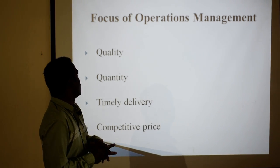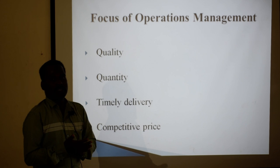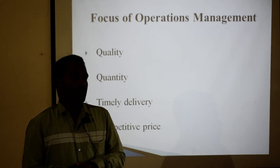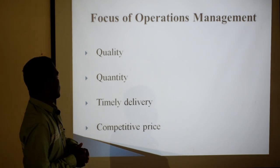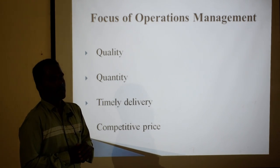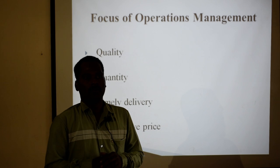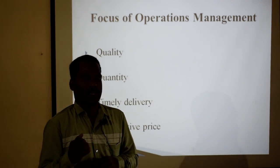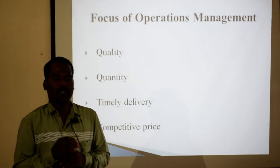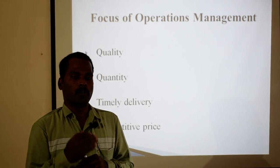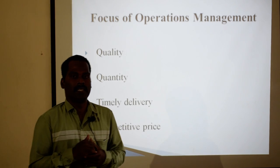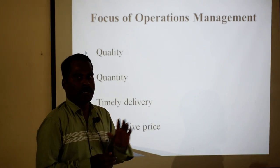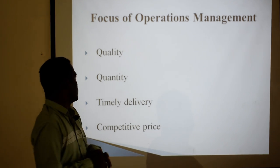In operations management, there are four things the operations manager has to focus on. Number one: quality. How good should our goods be? What is the quality we need to produce? What is our capacity and capability? What are the available resources to produce a quality good — we must focus on that.